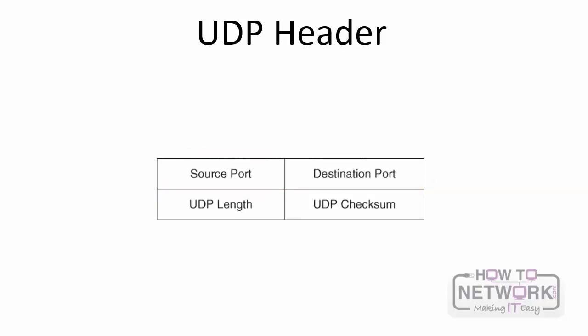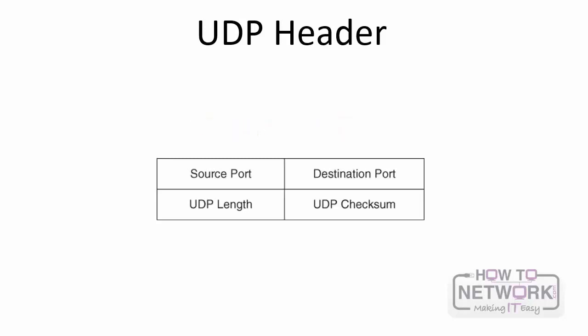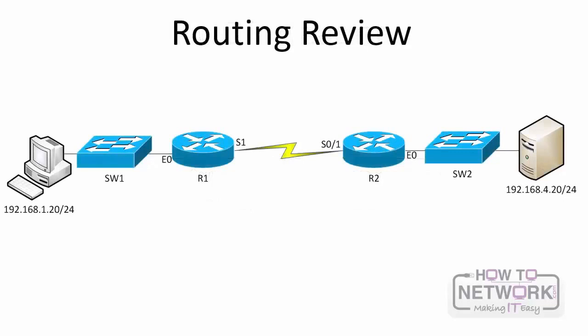Why use UDP? It's best for applications that need to maximize bandwidth and do not require acknowledgements, such as video streams or audio. The primary protocol used to carry voice and video traffic over networks is RTP — Real-time Transport Protocol — a layer 4 protocol encapsulated inside UDP. Now that you have a good understanding of the individual headers in the TCP/IP stack, let's look at how this traffic actually traverses the network using a basic example.